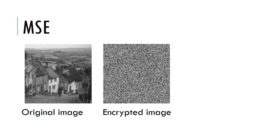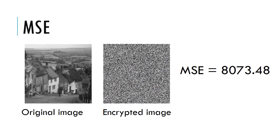Now let's calculate the MSE between two images. First we'll find it for the original and the encrypted images displayed here. The MSE is found to be 8073.48. There is a high difference between the encrypted and the original image, so we can infer that the crypto system is a strong one.